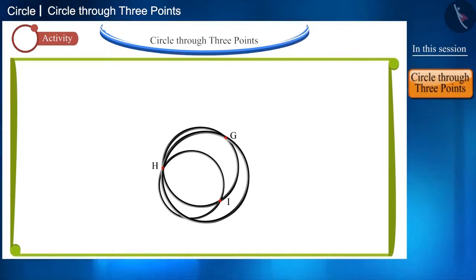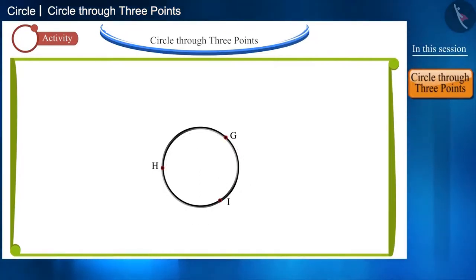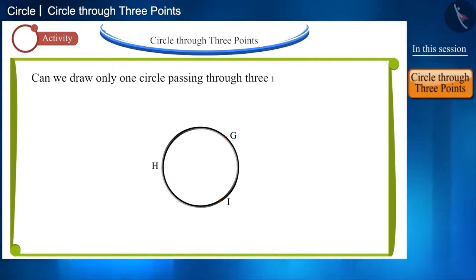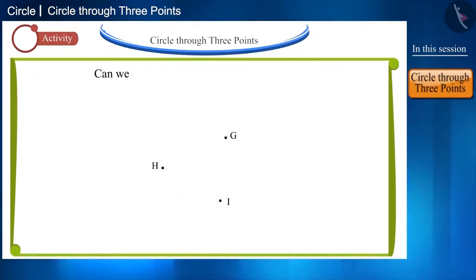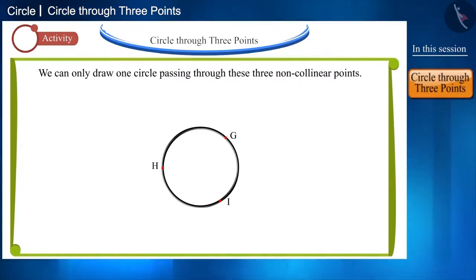Friends, here you can only get the ring with one radius that will pass through these three points G, H and I. So, can we say that we can draw one and only one circle passing through three non-collinear points? Let's check. Can we draw more circles from these points? No. We can only draw one circle passing through these three non-collinear points.